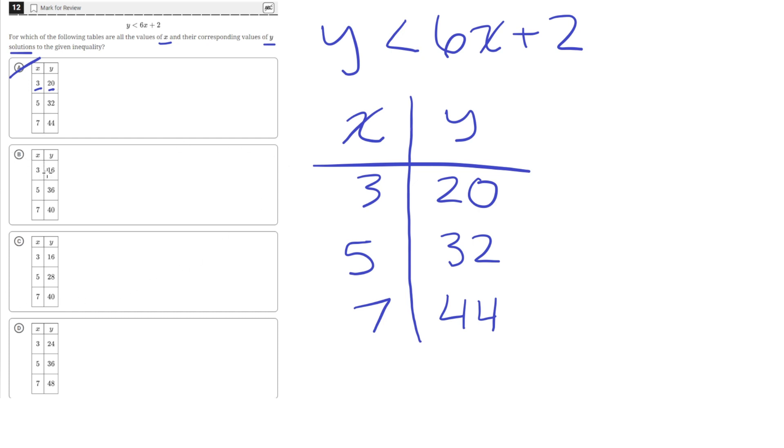Answer choice B says, at an x value of 3, y is 16. That's good, because 16 is less than 20. At an x value of 5, y is 36. That's not good, because 36 is greater than 32. So that would not be a solution to the inequality. So B is incorrect.